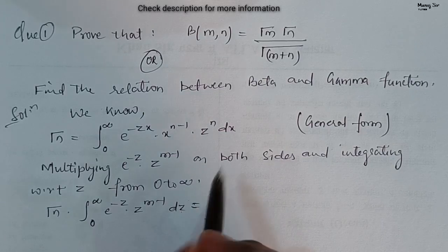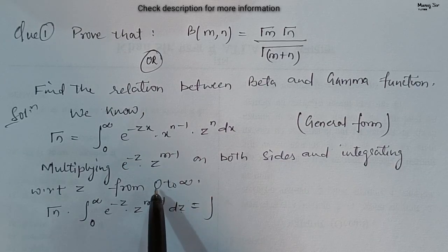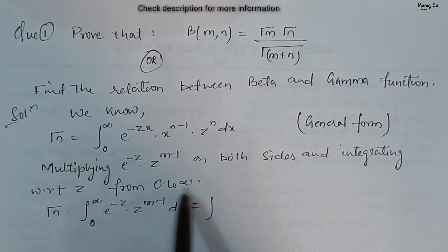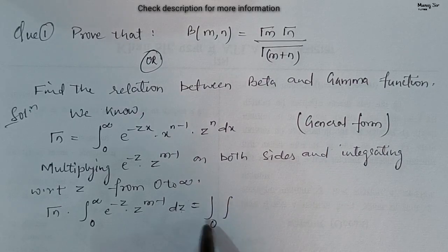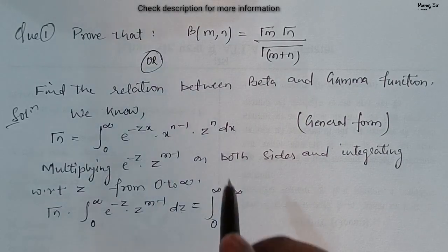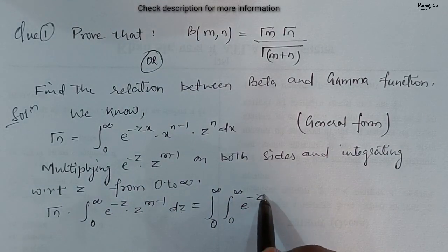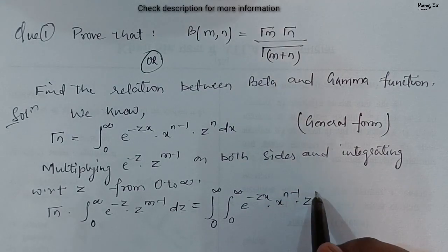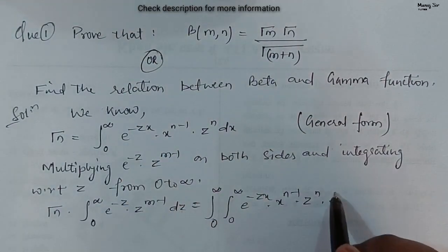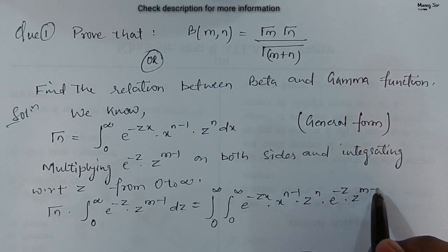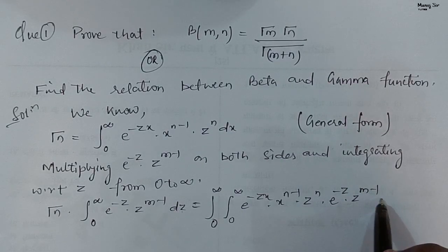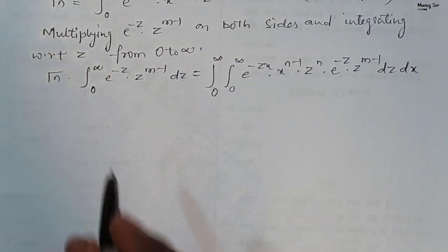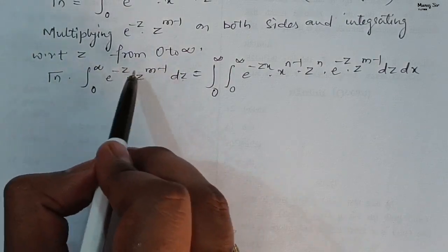This equals to a double integral with limits 0 to infinity and 0 to infinity. We write e to the power minus zx into x to the power n minus 1 into z power n, then e to the power minus z into z power m minus 1, then dz dx. You can see this inner integral with respect to z is gamma of m.